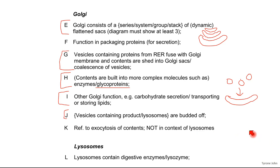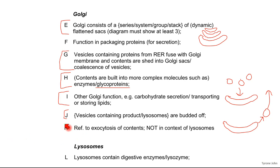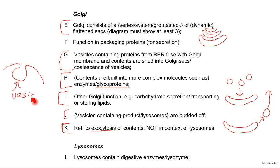Point J is talking about the flattened sacs again and when a vesicle comes budding off. When a vesicle buds off the Golgi body, it travels to the cell membrane, which leads us to point K — where the contents of the vesicles are released from the cell. That's exocytosis: the vesicle fuses with the cell membrane and substances are released. So there are quite a lot of marks here for the Golgi.